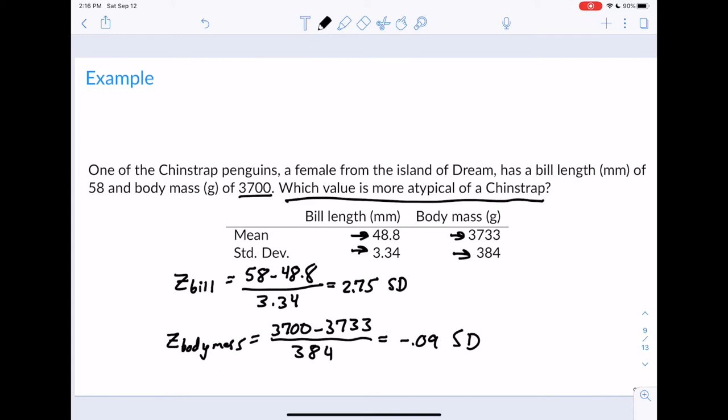We see that her body mass is negative 0.09 standard deviations, which means her body mass is 0.09 standard deviations below the mean. She's above the mean by 2.75 standard deviations in bill length and below the mean by 0.09 standard deviations in body mass.